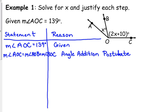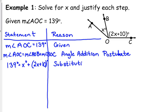Now we can put in our specifics. We know that the measure of angle AOC is 139 degrees, the measure of angle AOB is X degrees, and BOC is 2X plus 10 degrees. What do we do right there? We substitute — that was the substitution property. We replaced those symbols with numbers and expressions.